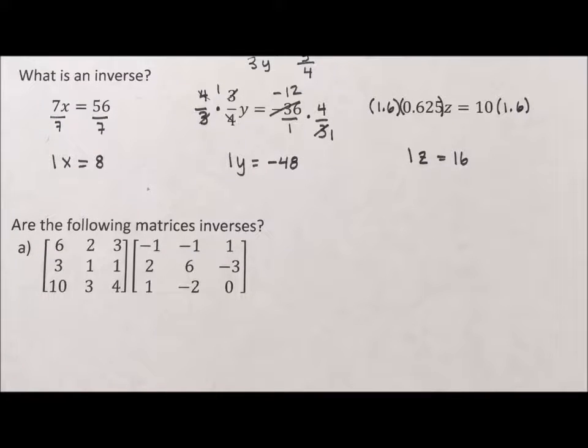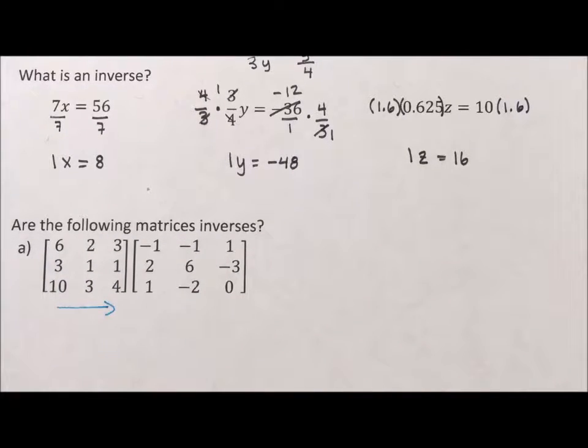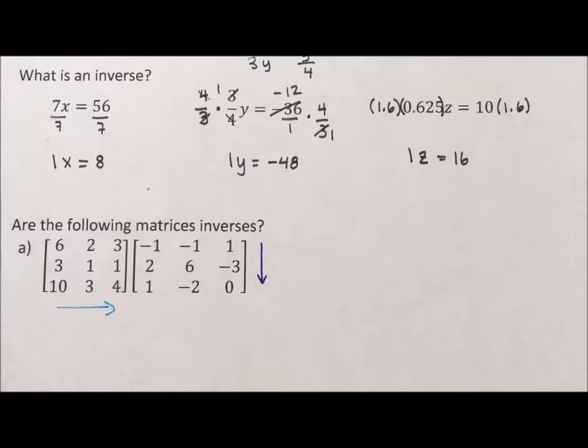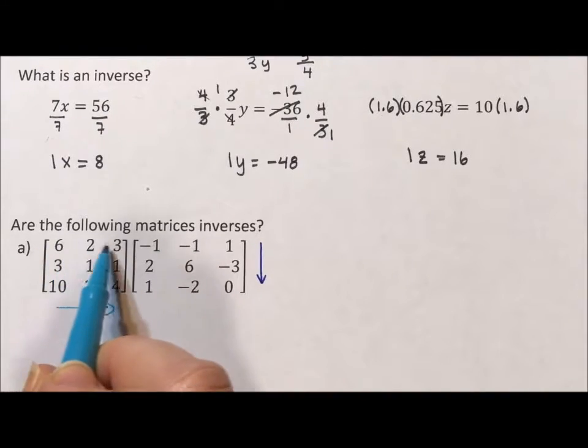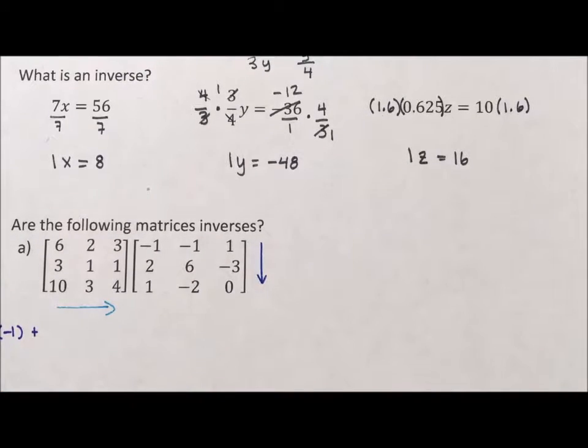I have videos on how to multiply matrices if you don't know, but basically we take all of the rows in the first matrix and element by element multiply them to all of the columns in the second matrix. For the first row, first element of my solution matrix, I use this row and this column. I take 6 and multiply it by negative 1, add 2 multiplied by 2, and add 3 multiplied by 1. I'm not going to continue using two colors—I have videos that go through this slowly. I'm going to just quickly crank this out.